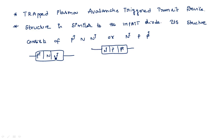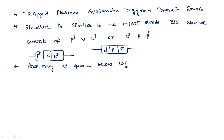The operating frequency of this TRAPATT diode is below 10 gigahertz. It is operated below 10 GHz. It is a p-n junction diode characterized by the formation of the trapped space charge plasma within the junction region.